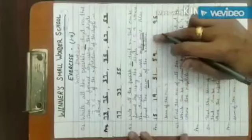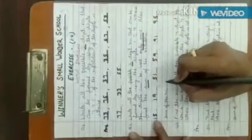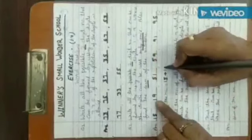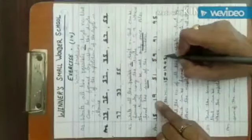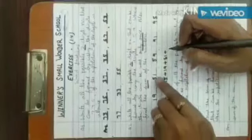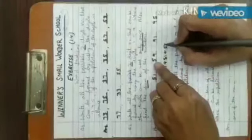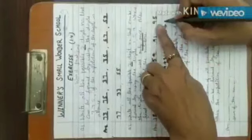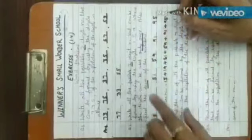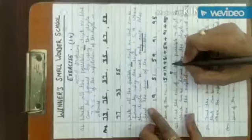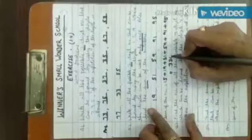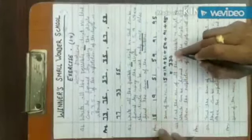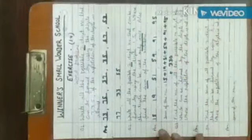Six digits in total. Now, the sum of the numbers: 15 + 19 + 51 + 59 + 91 + 95. The total is 330.